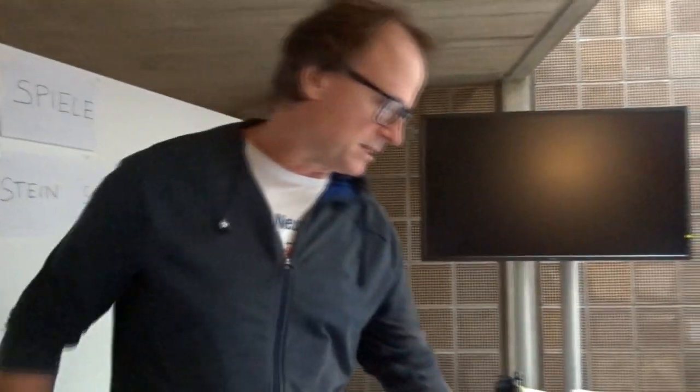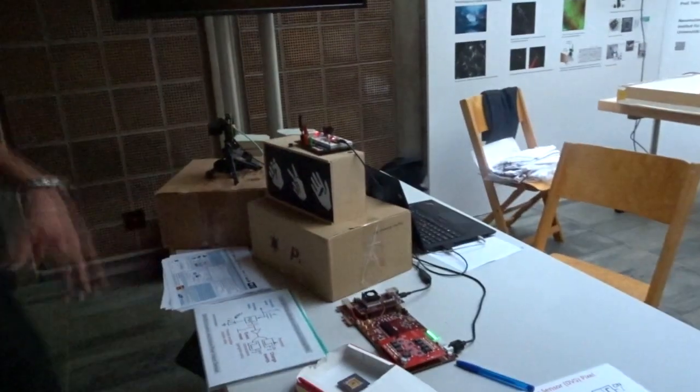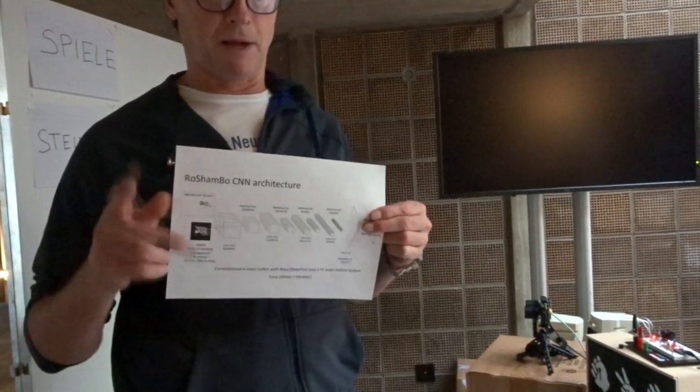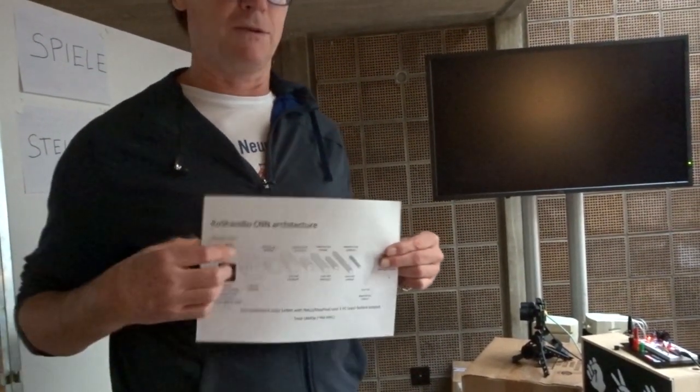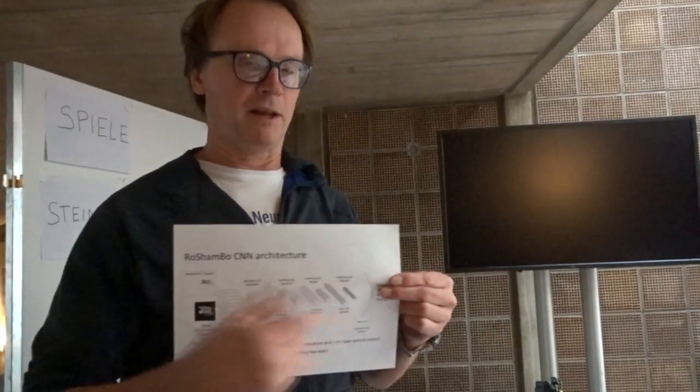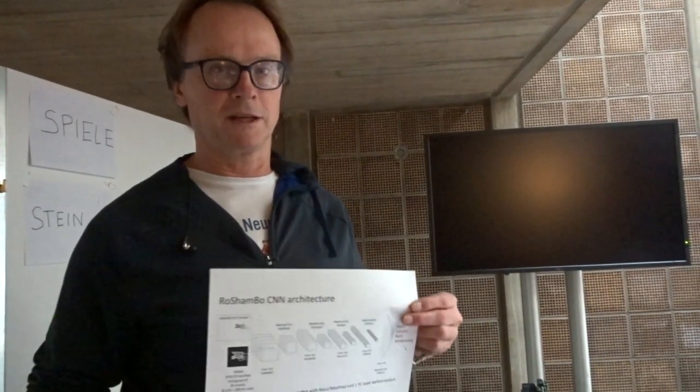This CNN accelerator can compute this network in about 6 milliseconds. This CNN here has about 114,000 weights and it takes 18 mega operations, multiplied ads, to compute one path through the network. Actually, with this small CNN, this small seven layer CNN, null hop is not very efficient. But still, it only takes 6 milliseconds.